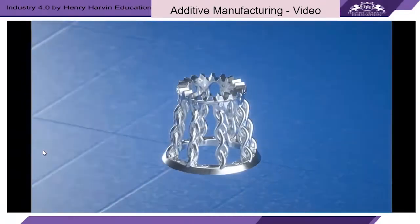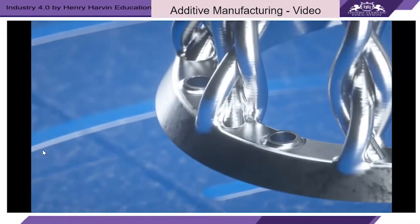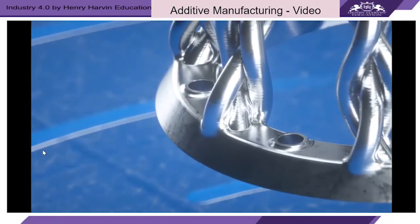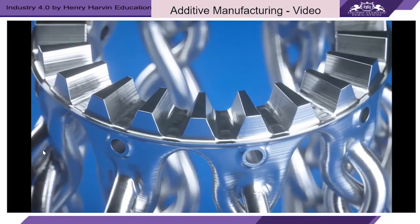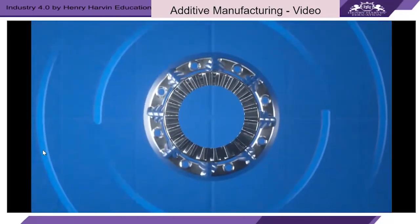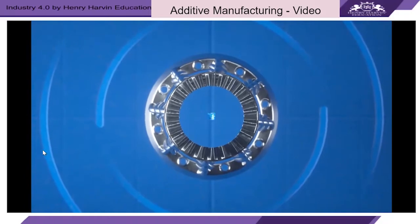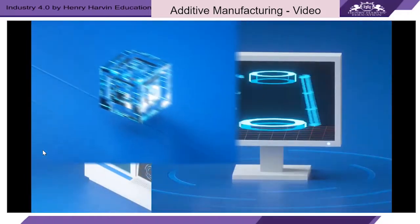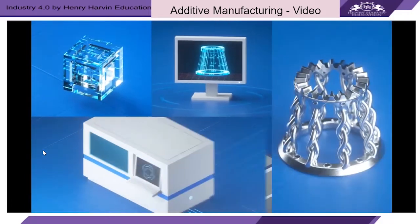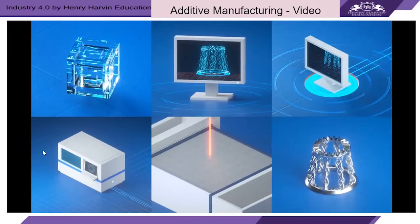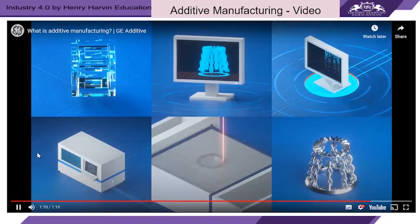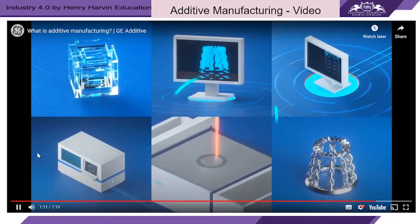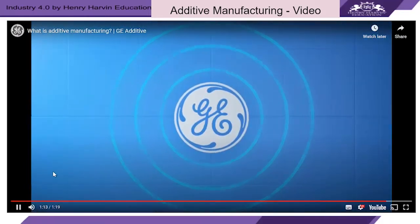Additive manufacturing allows you to produce parts that are lighter, stronger, and more durable than traditionally made parts. Build times are faster, and engineers can add precise features and complex geometries without increasing cost. In fact, additive manufacturing is revolutionizing the way we work.